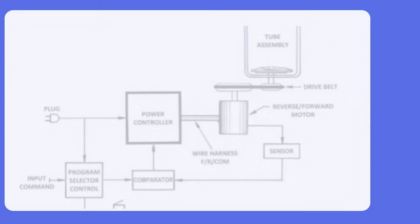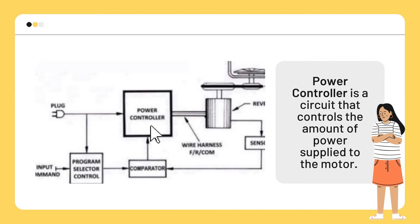Now let's discuss the block diagram of an electronically controlled washing machine. First, the power controller: it is a circuit that controls the amount of power supplied to the motor.